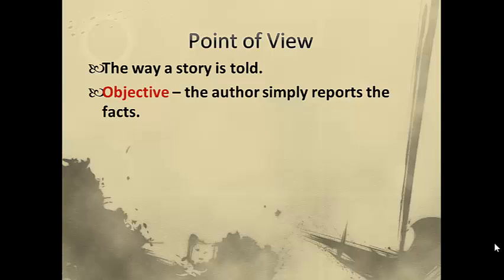Now there are different types of point of view. The first one is objective. Objective point of view is where the author simply reports the facts. We see it, or we hope to see it, in our news media. The news anchorman comes on and he simply reports the facts of the story. They don't put any of their own opinion into it.